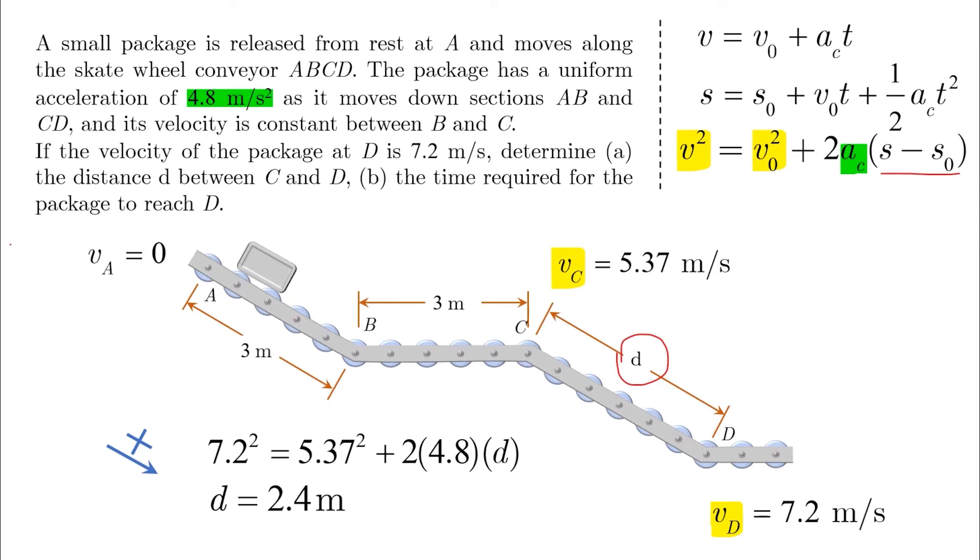Pay attention all the time to the resulting sign. Here, D came positive, which makes sense with our positive assumption going down.